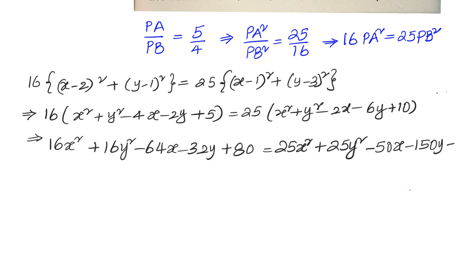Moving all left hand side terms to the right hand side, we get 9x² + 9y² + 14x - 118y + 170 = 0.